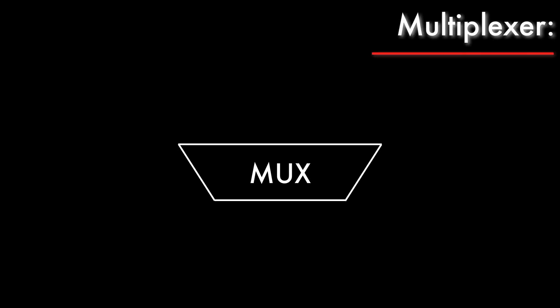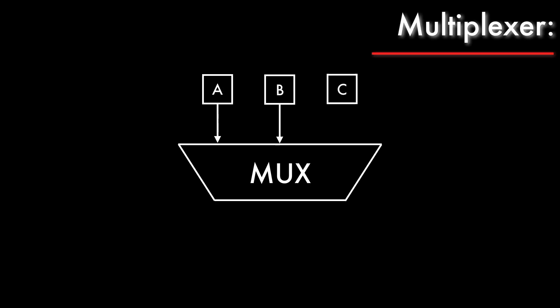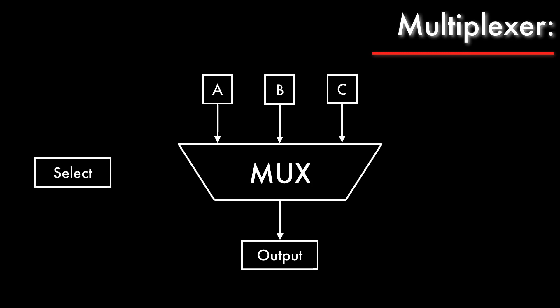A multiplexer, or MUX for short, is a device that can choose one out of many input signals and connect it to the output. A separate selection input tells the MUX which signal we want.